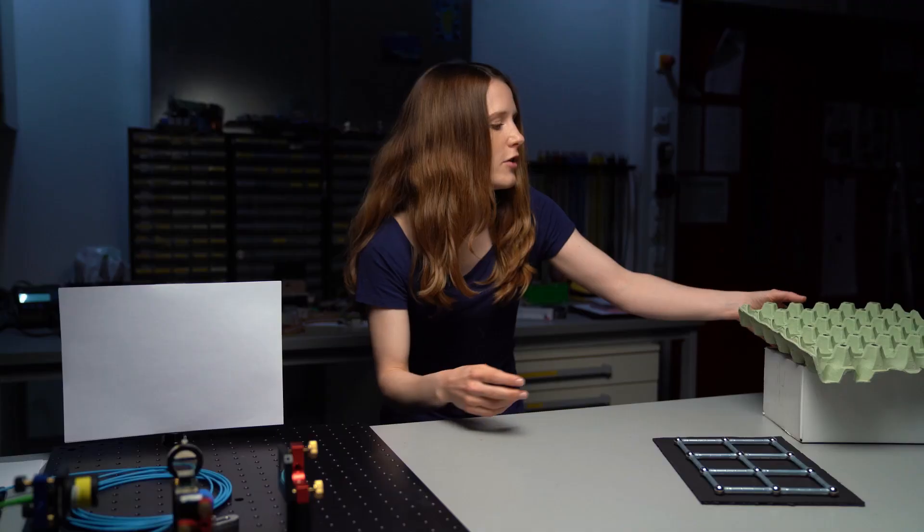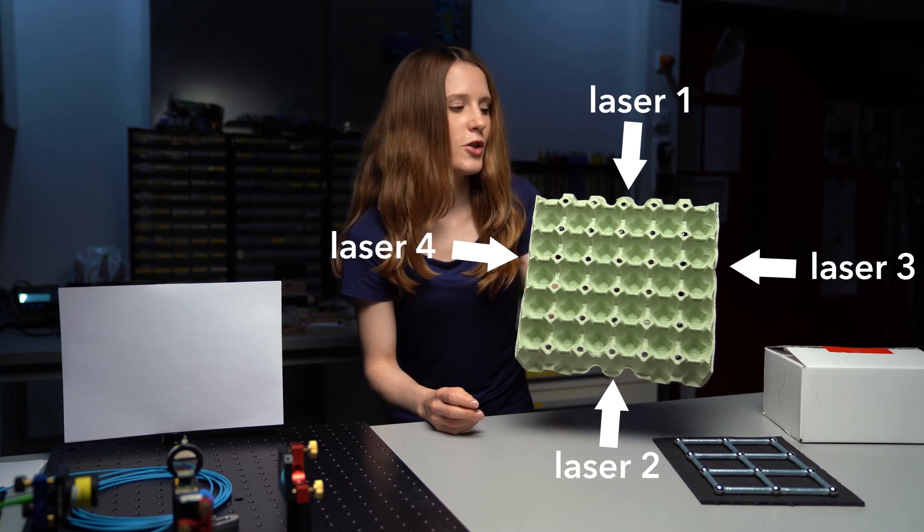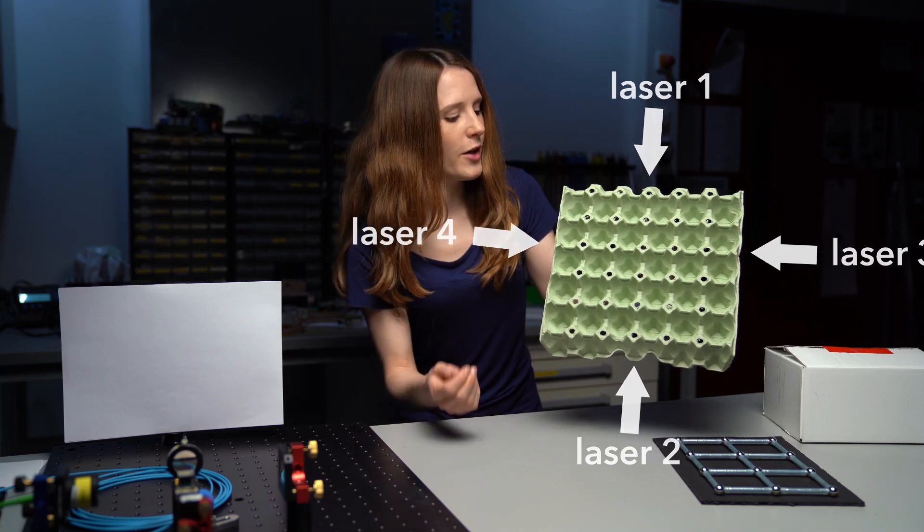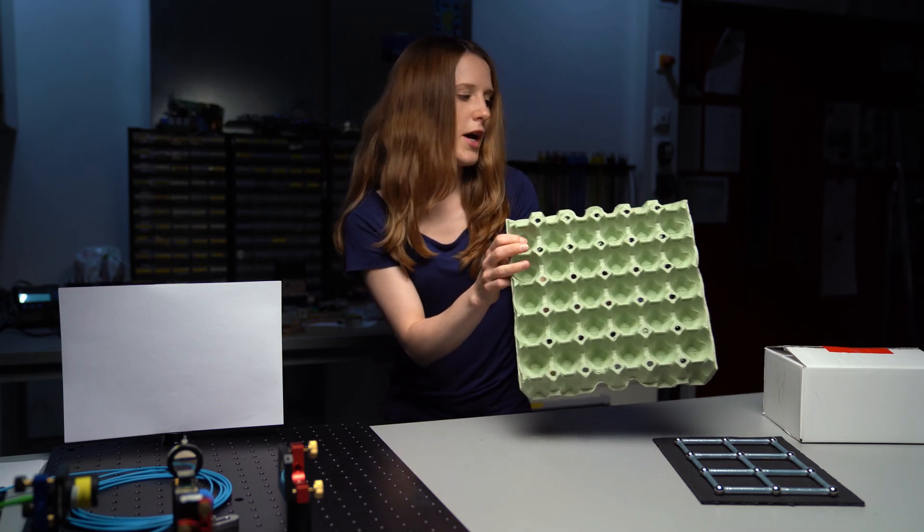We can go further and for example interfere four laser beams instead of two to create a two-dimensional optical lattice. So that would look like this. We have again minima and maxima now being arranged in a square lattice pattern.